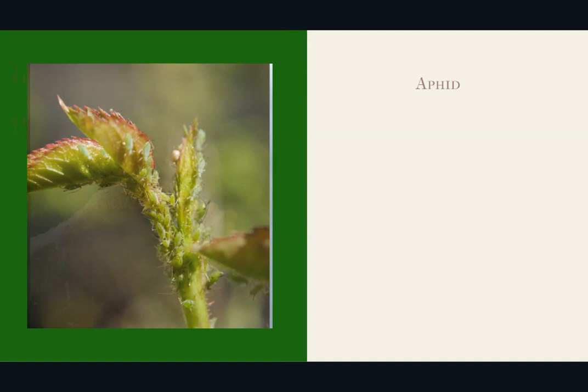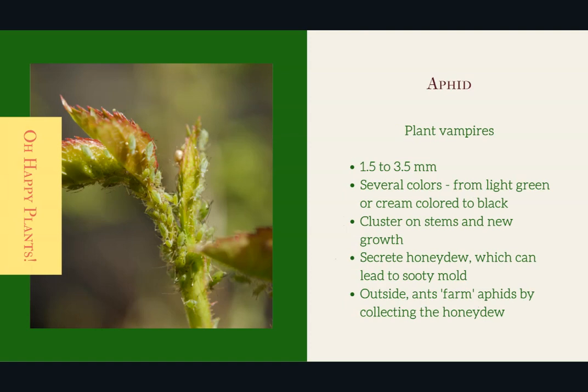Alright, aphids are also wee vampires and some of them actually inject a toxin into the plant that can cause stunted and deformed growth. So if you see the growth tip all deformed or new leaves coming in deformed, it may be aphids — or it can be mites, but possibly aphids. The great thing about aphids is they're really easy to see. You recognize them by their soft bodies — they're either green or black, and sometimes kind of cream colored. Often outside they'll be farmed by ants who like to eat the honeydew they secrete. Again, they secrete honeydew which can lead to black sooty mold, so it's really important to take care of them. But they have little soft bodies and are pretty susceptible to any of the treatments, so it's pretty easy to take care of them.